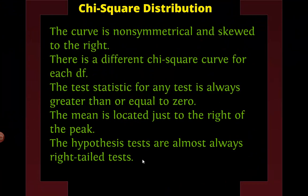Here are some more properties: it's not symmetrical — it is skewed to the right. Every chi-square curve is different at every degrees of freedom, so every one is a little different. Similar to the t-distribution, where it keeps getting closer to the normal, this one also is different at every degrees of freedom. The test statistic is always greater than or equal to zero. The mean is located just to the right of the peak, because we know it's skewed. And the hypothesis tests are almost always right-tailed tests — we're always looking to see if it's greater than zero.